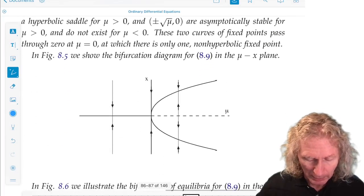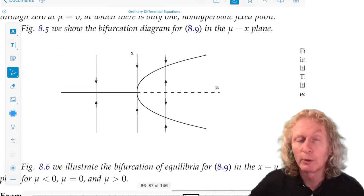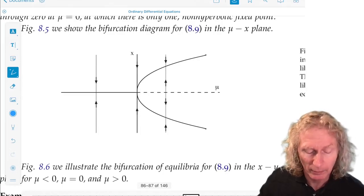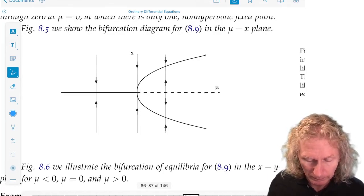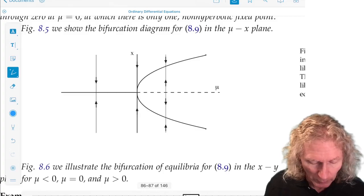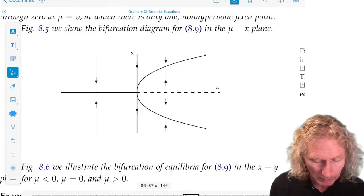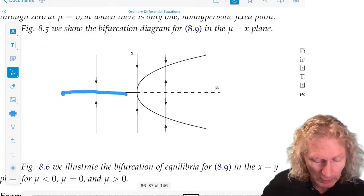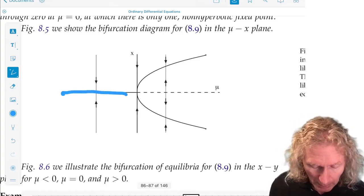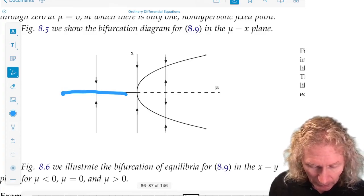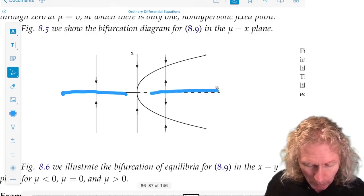So we plot in the μ-x plane, the bifurcation diagram. So we see exactly what I just said, that for μ less than 0, the origin is asymptotically stable.